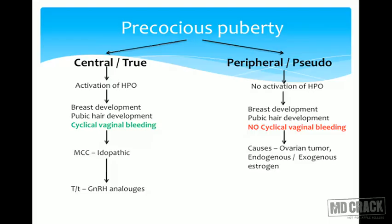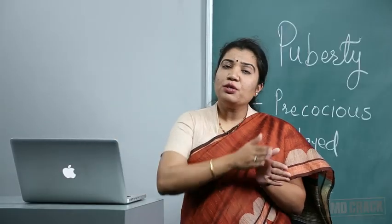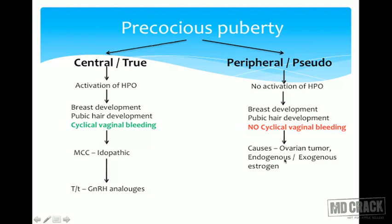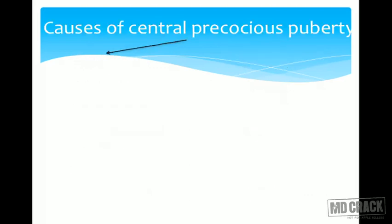In peripheral or pseudo precocious puberty, causes include estrogen-secreting ovarian tumors such as granulosa cell tumors. Endogenous or exogenous estrogen leads to thelarche and pubarche but no cyclical vaginal bleeding, because constant estrogen causes only endometrial proliferation without withdrawal. Treatment is directed at the cause — removing a tumor or stopping offending drugs.